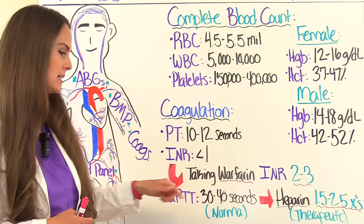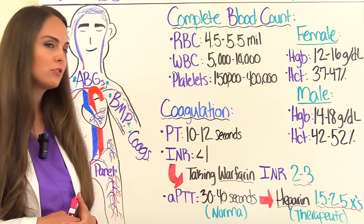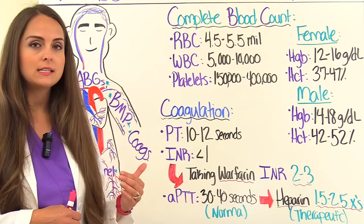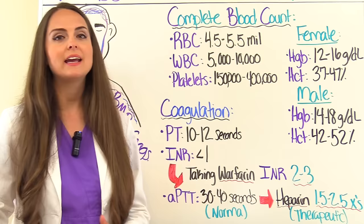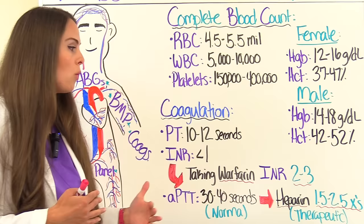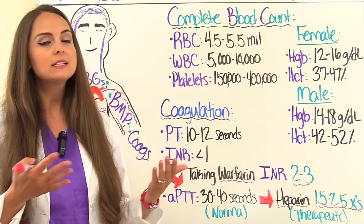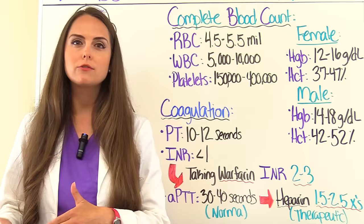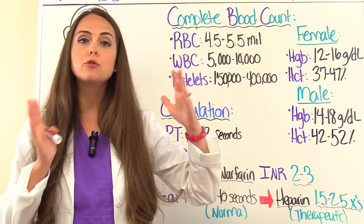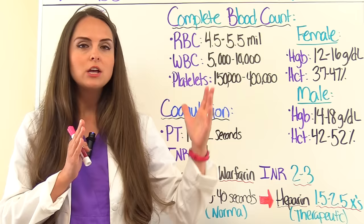Now let's look at the APTT — activated partial thromboplastin time — used for patients taking heparin. A normal APTT in a patient not taking heparin is 30 to 40 seconds. If they're taking heparin, we need them within a certain range to be therapeutic, which is one and a half to two and a half times the normal range — about 60 to 80 seconds. If they're less than 60 seconds, they're not therapeutic and the heparin dose needs to be increased. If they're greater than 80 seconds, it's taking too long to clot — too much heparin — so the dose needs to be decreased.